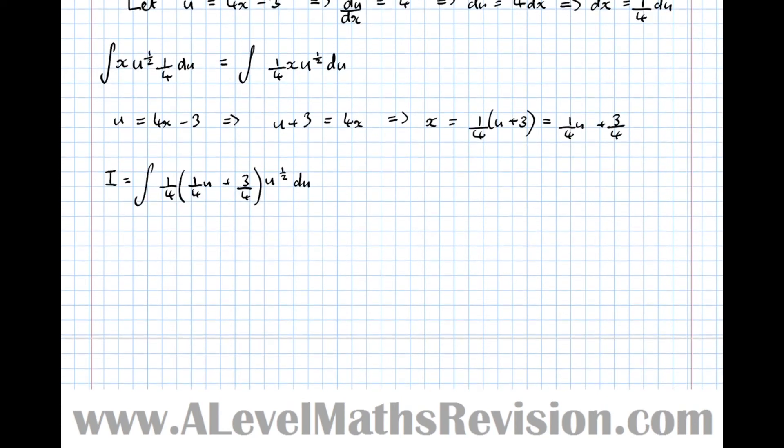So we've done the hard work now, the next bit's relatively straightforward, just need to multiply these brackets out till we get an expression we can actually integrate. So first of all, I'm going to take a quarter outside the integral sign, so equals 1 quarter the integral of a quarter u plus 3 quarters u to the half. And actually I can take another quarter out, I can see that both of these have a factor of a quarter, so I can make this even easier to do by taking another quarter out. So 1 16th, u plus 3 u to the half du. And let's multiply the bracket out now, 1 16th the integral, so u times u to the half, add the powers, gives u to the 3 over 2, plus 3 u to the half du.